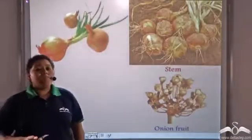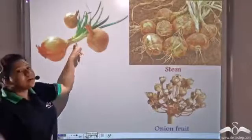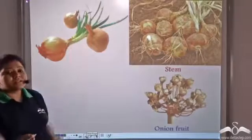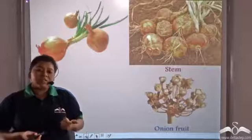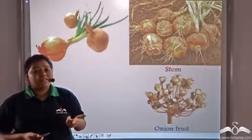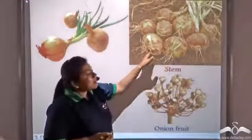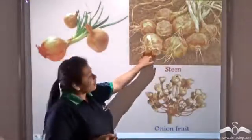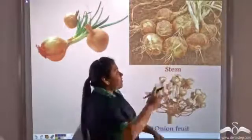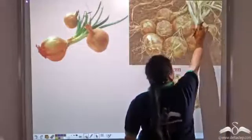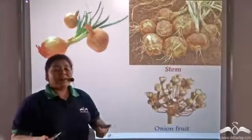Now how many of you have observed plants coming out of an onion? So is onion a fruit or a seed? Well, neither. Onion is actually a stem. Onion has roots below and shoot on the top — it is an underground stem.